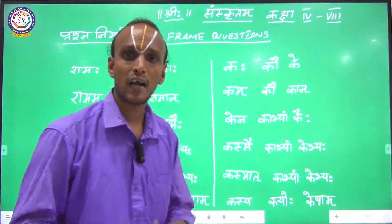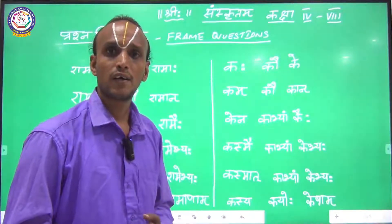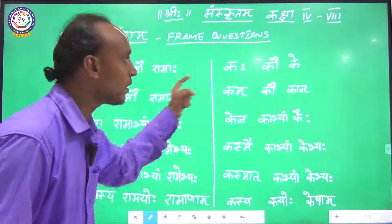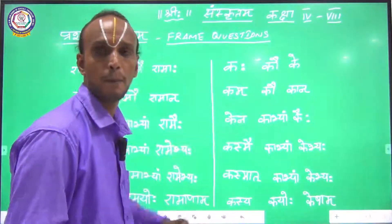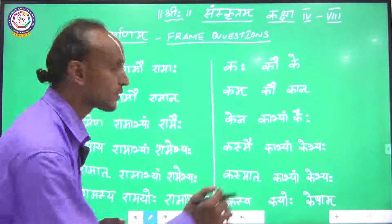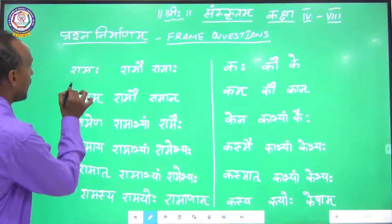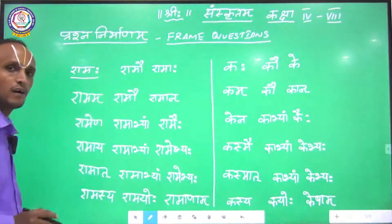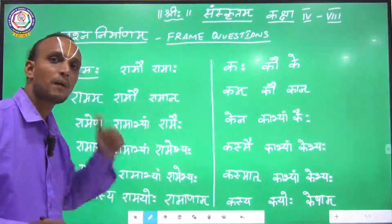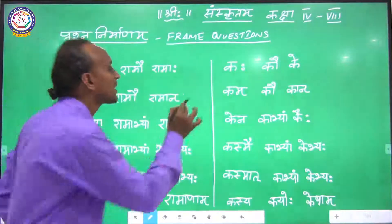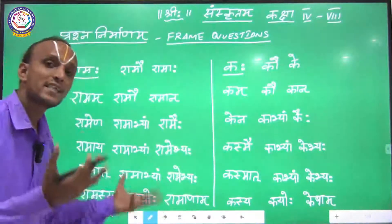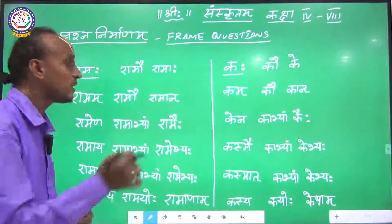In Kimshabdaha, if the word is in Pumlingaha, then you have to take the Pumlingaha shabda. See here — Ramaha. What is the question tag for this word Ramaha? Ramaha — Kaha. See here, I will write this example.